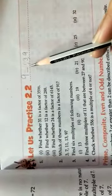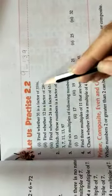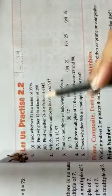So 9 ke factors kya hai? 1, 3, 9. Now question number 1 first part: find whether 31 is a factor of 3596. Kya 31 factor hai is number ka? That means ye number 31 se divide ho jayega? You have to divide both numbers.